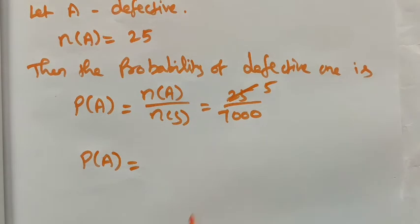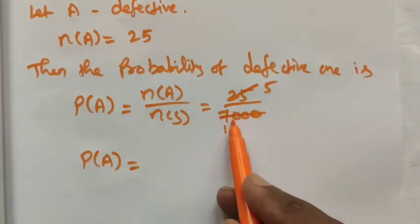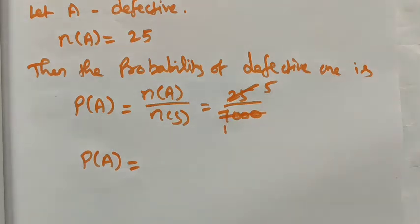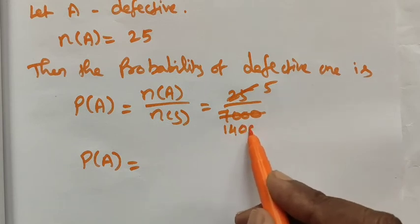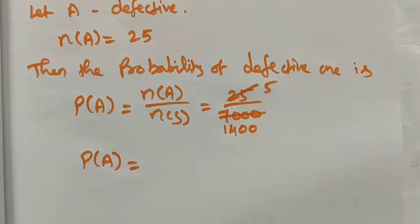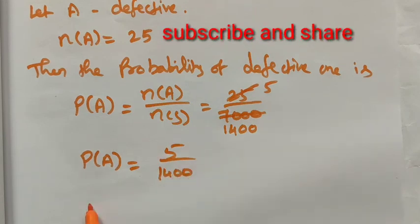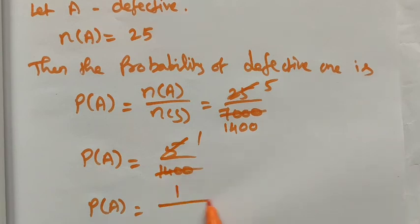Divide by 5, we get 5 fives are 25, we have 5 ones are 5, four times, and then zero zero. Again divide by 5, we get P(A) equals 5 ones are 5, 5 twos are 10, remainder is 4...